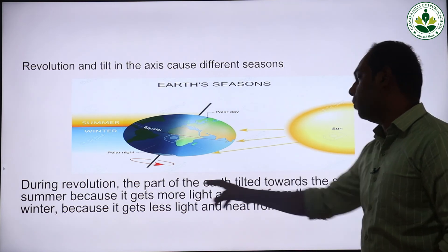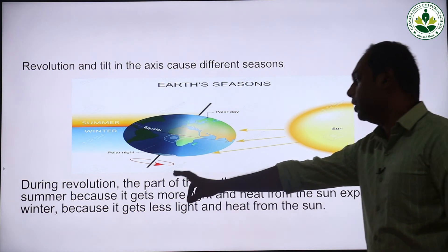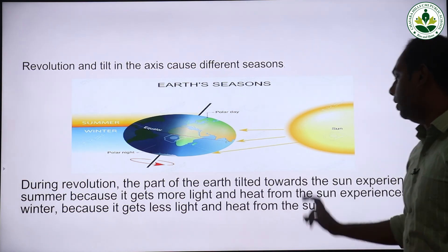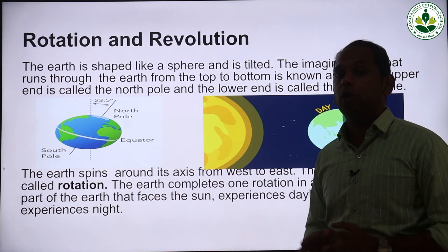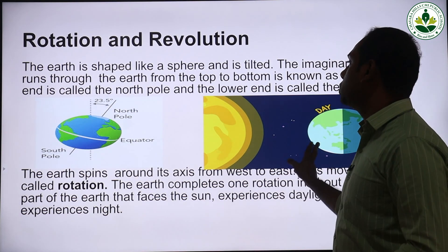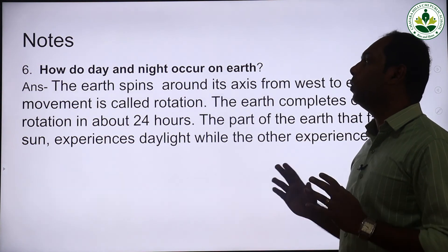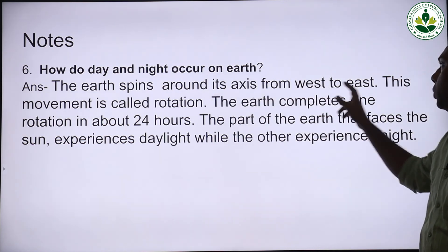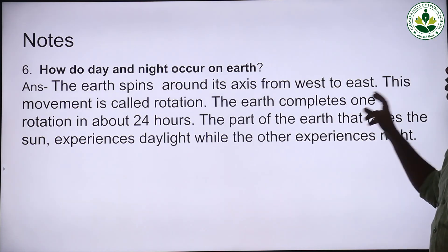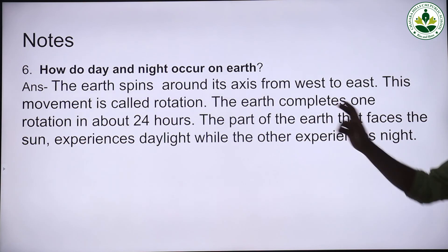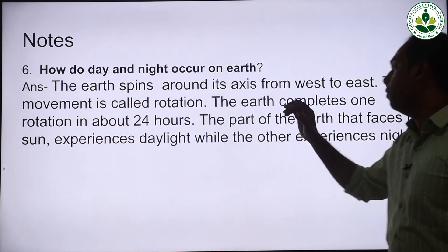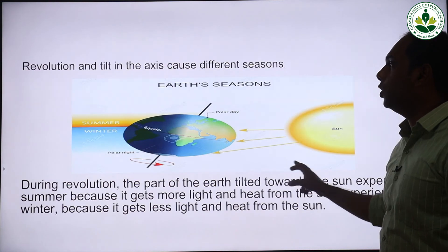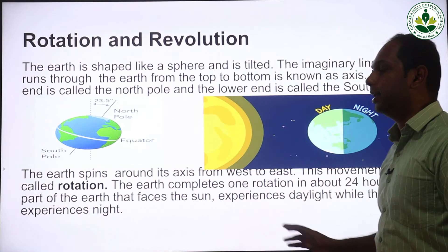In today's class we have understood the difference between rotation and revolution of the earth. Note for the day — How do day and night occur on earth? The earth spins around its axis from west to east; this movement is called rotation. The earth completes one rotation in about 24 hours. The part of the earth that faces the sun experiences daylight while the other experiences night. Write down the note in your notebook, study it, and read the textbook a minimum of three to four times and get a signature from your parents.